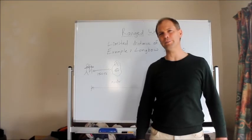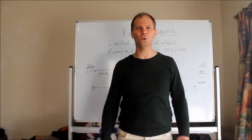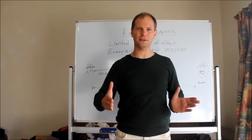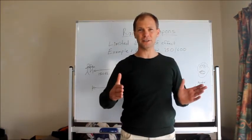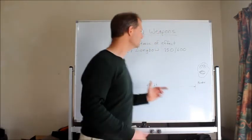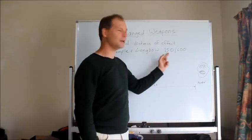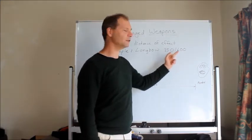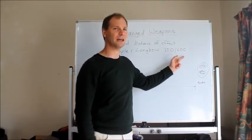All ranged weapons have a limited distance of effect. All ranged weapons have a range factor listed in the player's handbook. In this case I've taken the long bow. So the long bow is listed as 150 feet, that's normal range, and then beyond that it can shoot and be effective up to 600 feet.